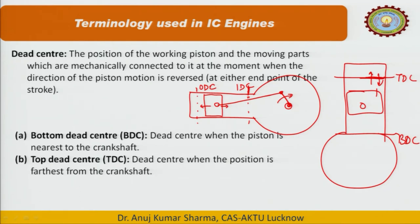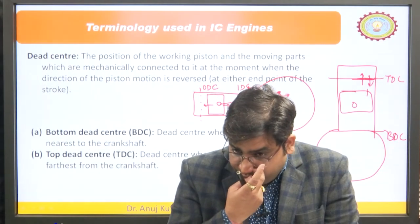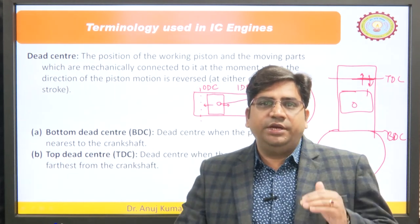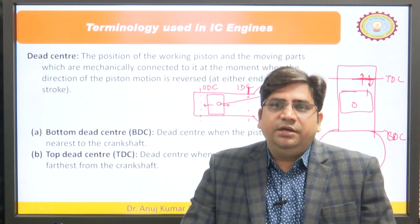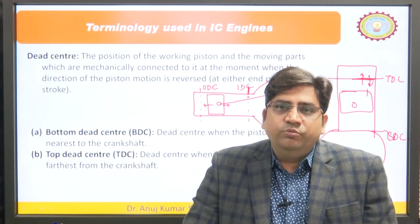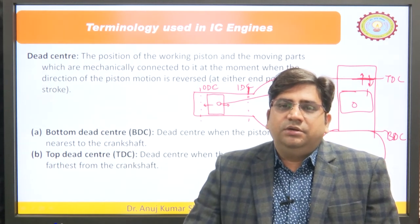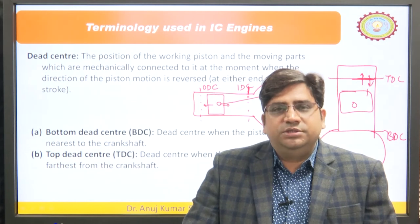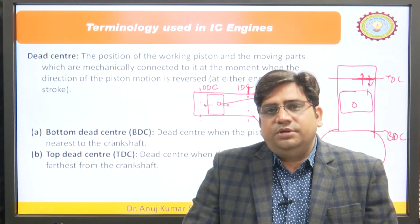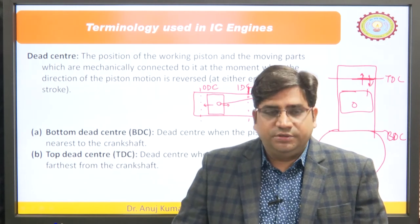At dead centres, the piston's velocity becomes zero because the direction of velocity is reversed at that particular moment. It means when the piston is exactly at TDC, BDC, IDC, or ODC, it will have zero velocity.